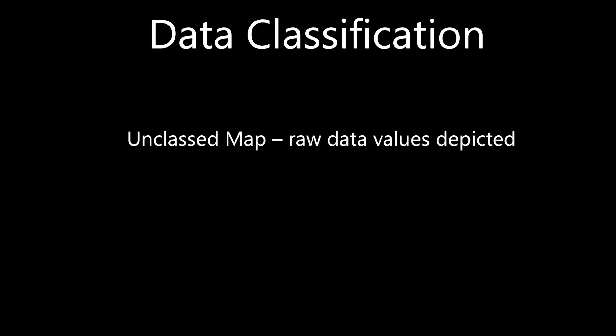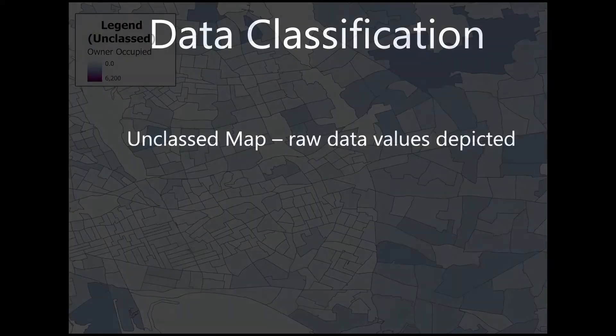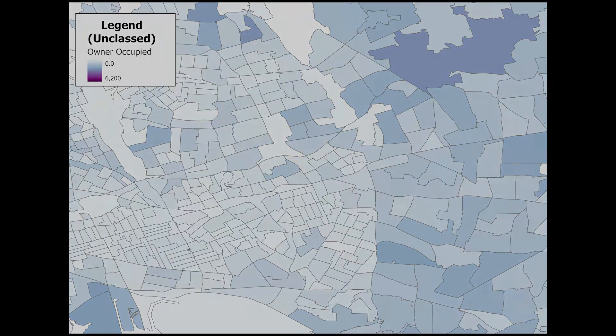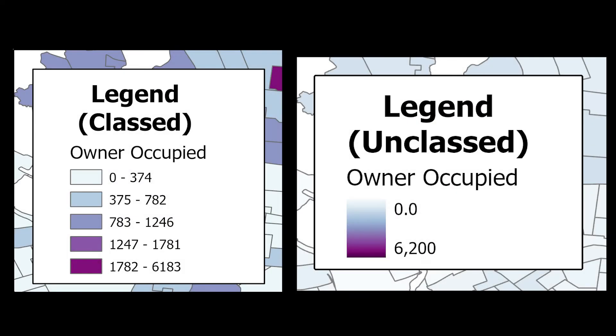By contrast are unclassed maps. This is simply where raw data values are depicted on a map. Here we see the same data set but now shown as an unclassed map. Unclassed maps are good at showing general patterns within a data set. Note too the difference in how the legends for each map are created.